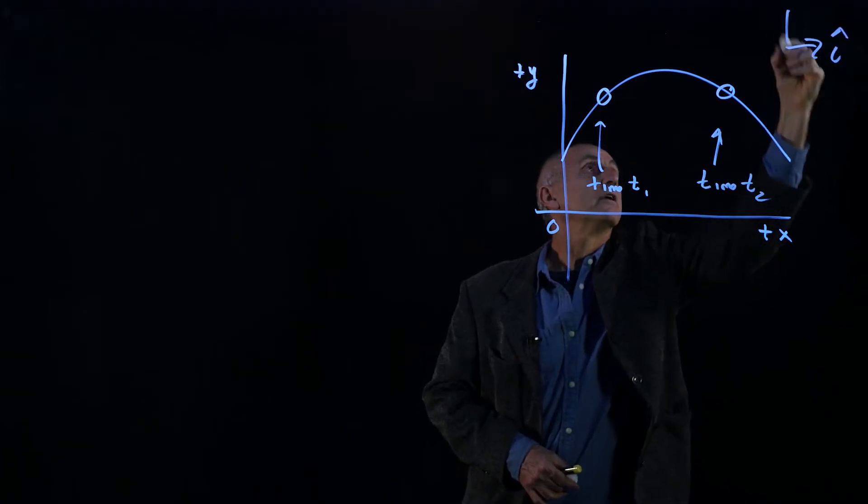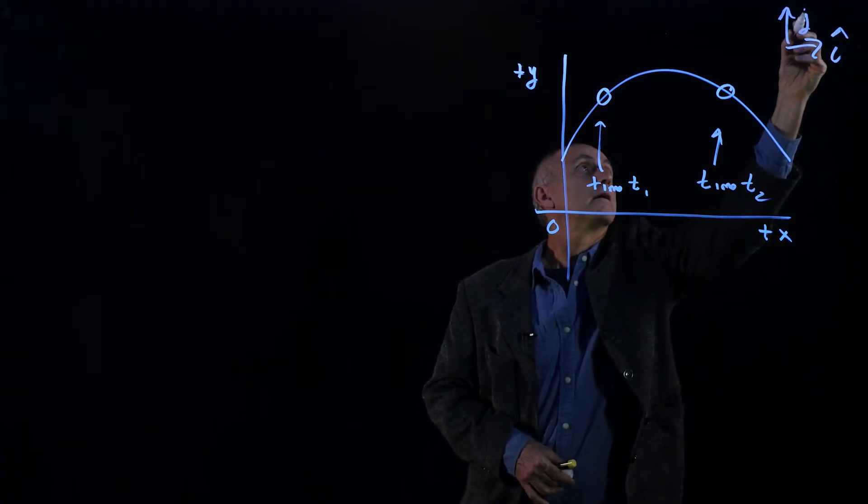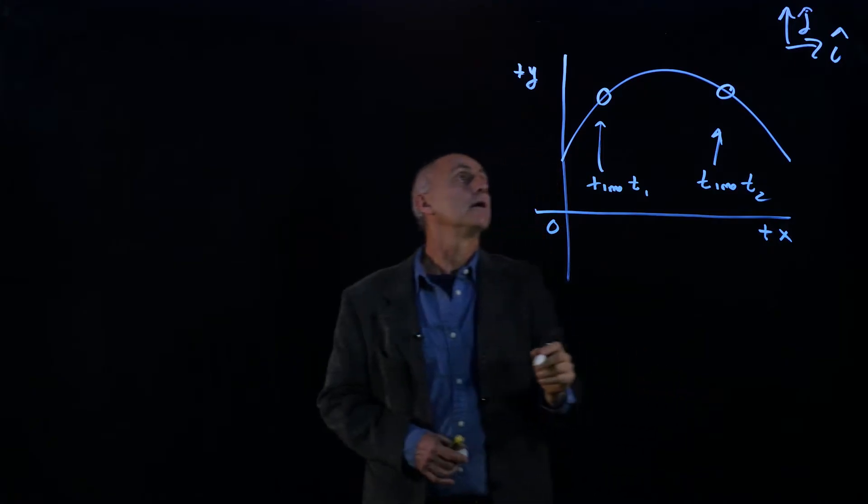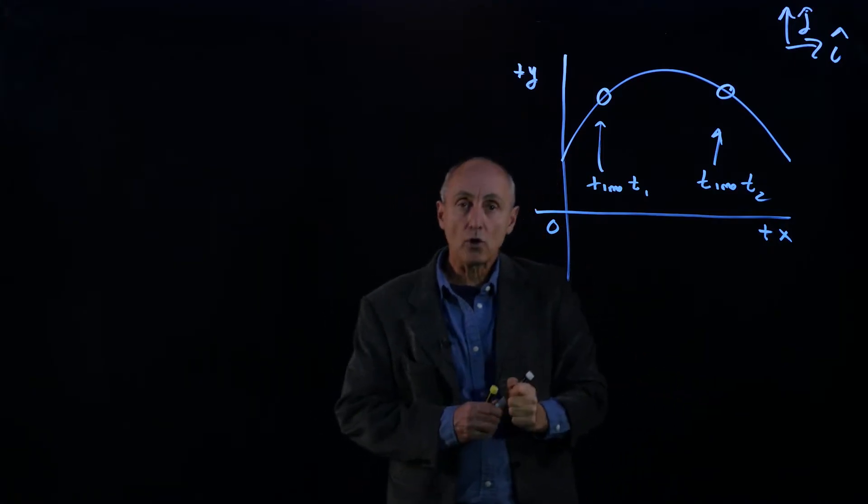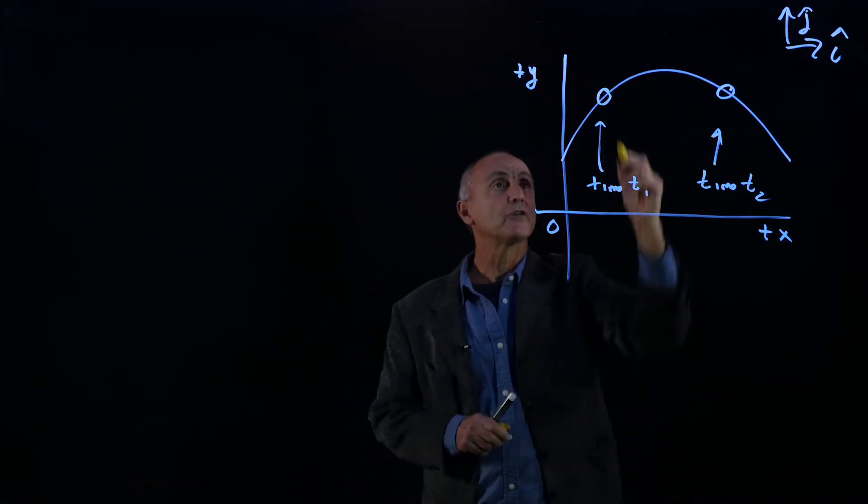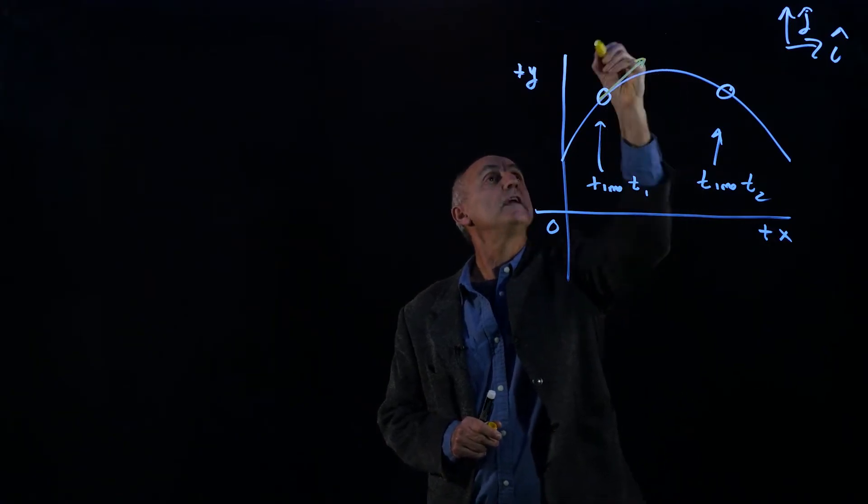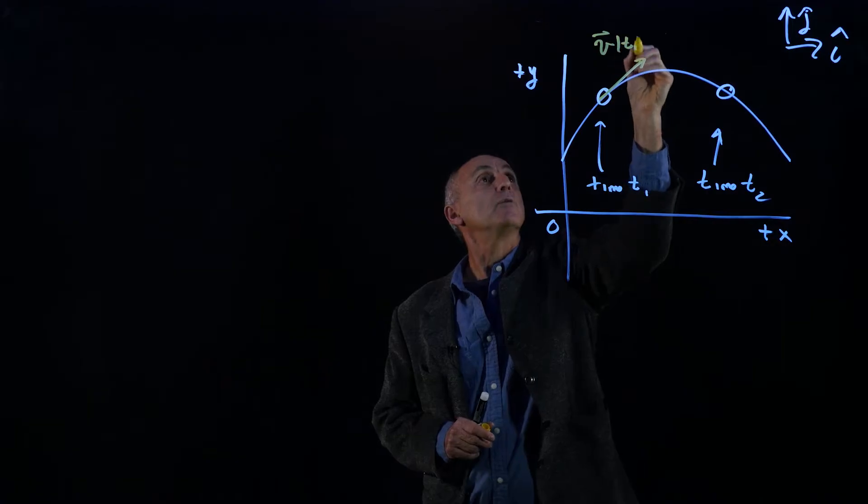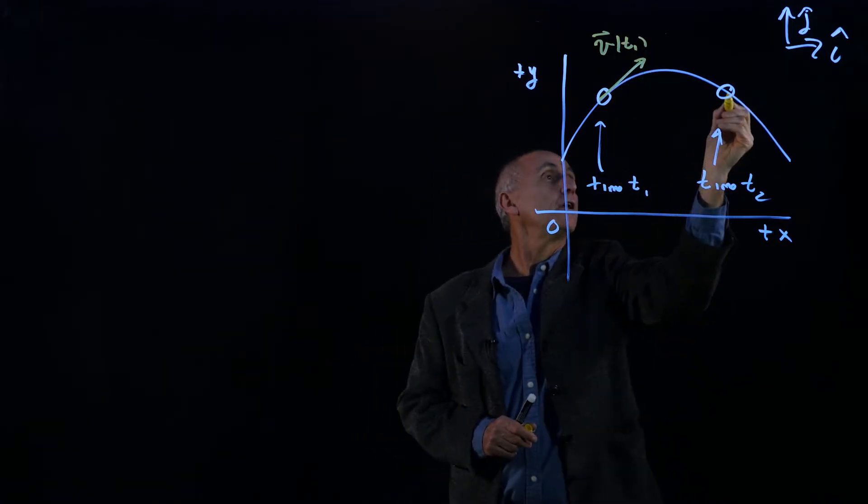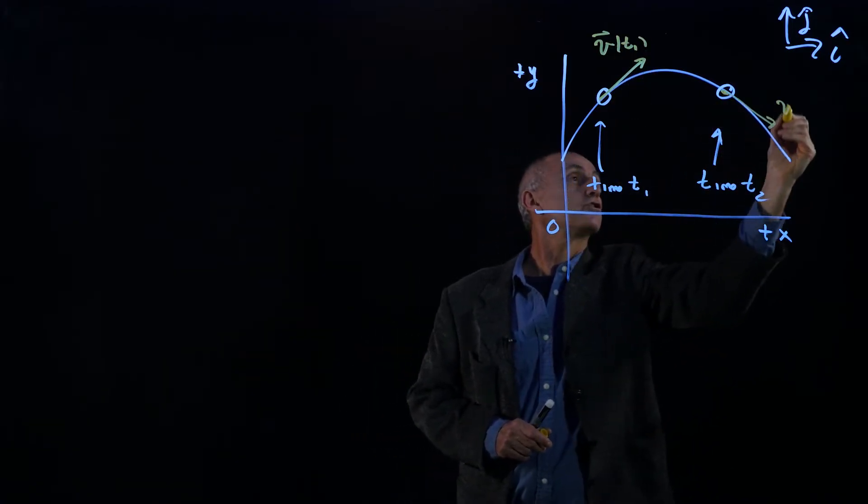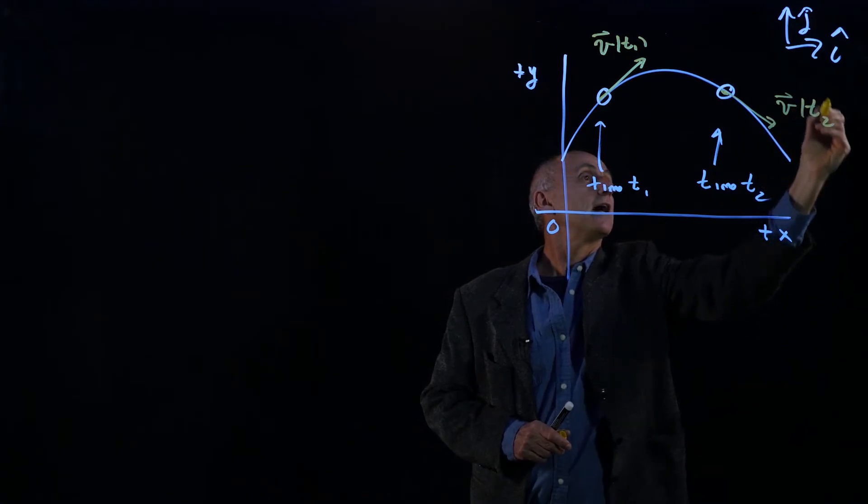We'll call our unit vectors i hat and j hat. Now we know that the direction of the velocity is tangent to this curve, so if we draw v at time t1, and over here, notice the direction has changed at time t2.